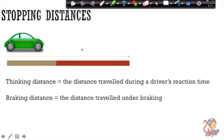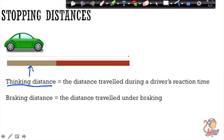Hello and welcome to this video about stopping distances. Stopping distance describes the distance it takes for an object to stop — particularly we normally talk about this in association with cars, or perhaps a bicycle. It's composed of two parts: a thinking distance, which is this first part here, and a braking distance, which is this part here.